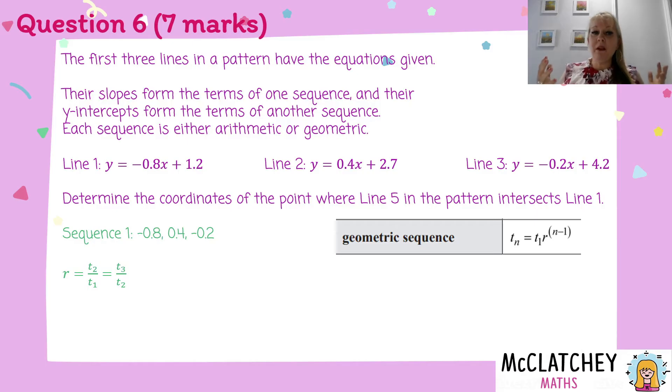And if those two numbers end up being the same, then we know it's definitely a geometric sequence, which we suspected that it was. So if we substitute that information in there now, I've got 0.4 divided by negative 0.8, then I've got equal to negative 0.2 divided by 0.4. That's going to give me a common ratio of negative 0.5.